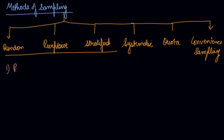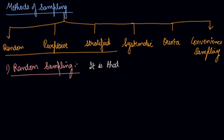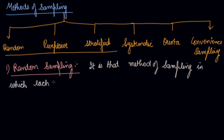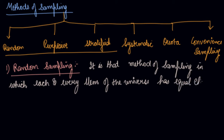Let's understand number one, that is random sampling. The name itself suggests that you are selecting the sample randomly. So there are equal chances of being selected for every item in the universe. This is the method of sampling in which each and every item of the universe has an equal chance of being selected in the sample.